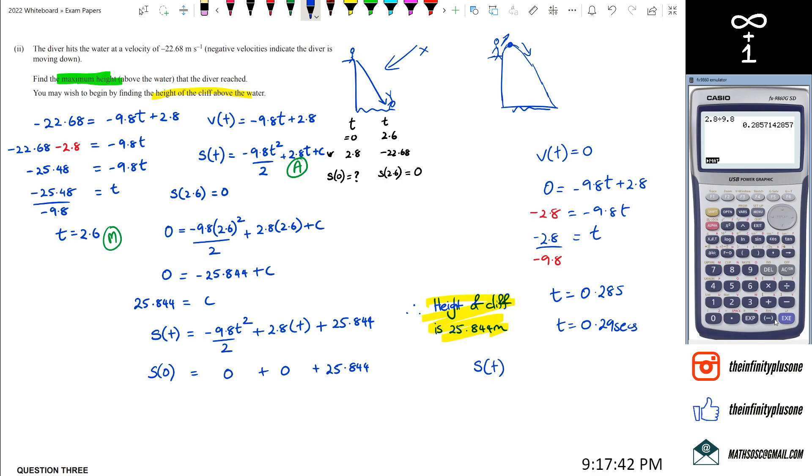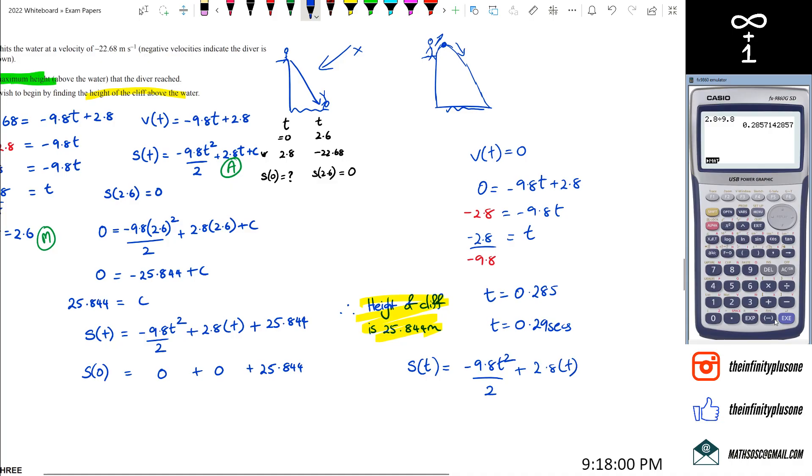We're going to go back to our s(t) equation, which is equal to -9.8t²/2 + 2.8t + 25.84. With this one, we've got s(0.29).